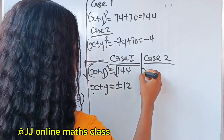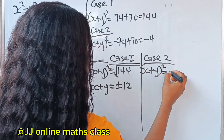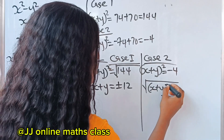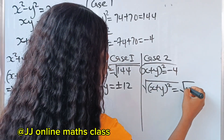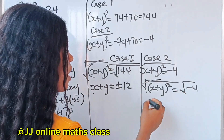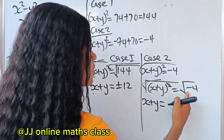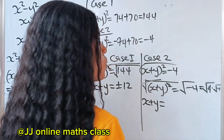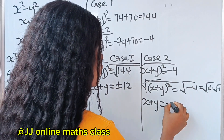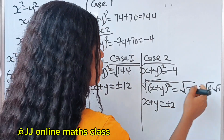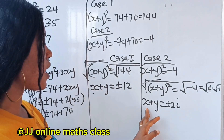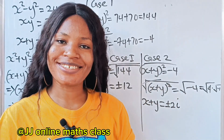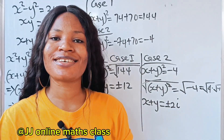Case two: x plus y squared equals negative 74 plus 70, which equals minus 4. Taking the square root of both sides, x plus y equals square root of minus 4, which equals square root of 4 times square root of minus 1. That gives us plus or minus 2i. So for case two, x plus y equals plus or minus 2i. Hope you enjoyed it — thank you for watching!